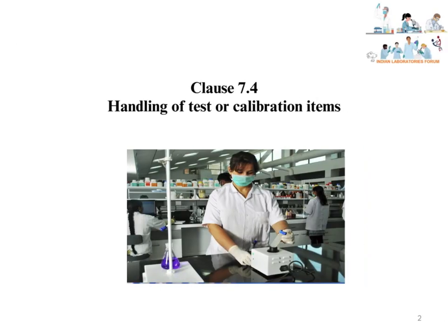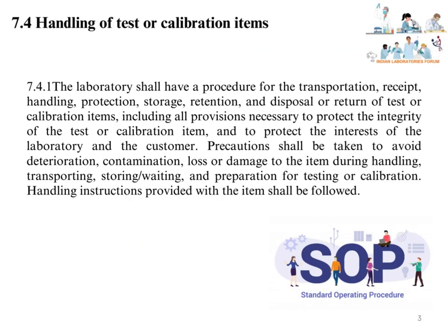Clause 7.4: Handling of Test or Calibration Items. The laboratory shall have a procedure for the transportation, receipt, handling, protection, storage, retention, and disposal or return of test or calibration items, including all provisions necessary to protect the integrity of the test or calibration item, and to protect the interests of the laboratory and the customer.